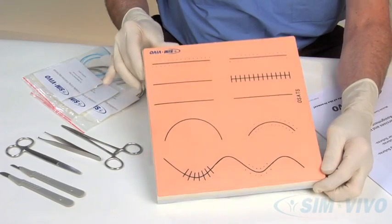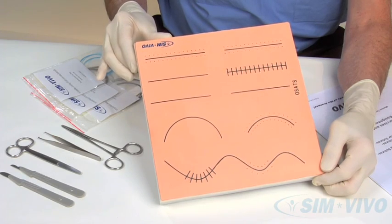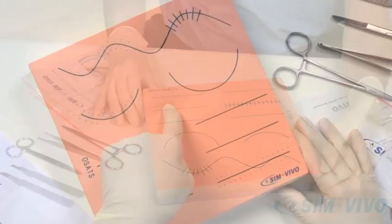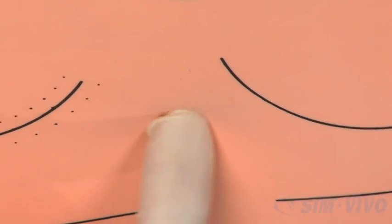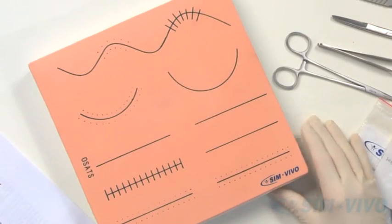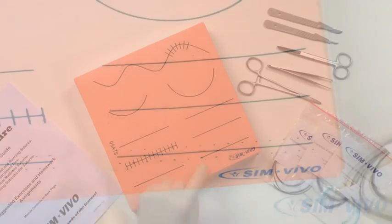This is the Suture Practice Board. It has been designed to resemble skin sufficiently to allow a realistic suturing experience. The outer layer is loosely adhered to the foam by a layer of areolar material that simulates subcutaneous tissue. Imprinted lines are available to guide your practice.